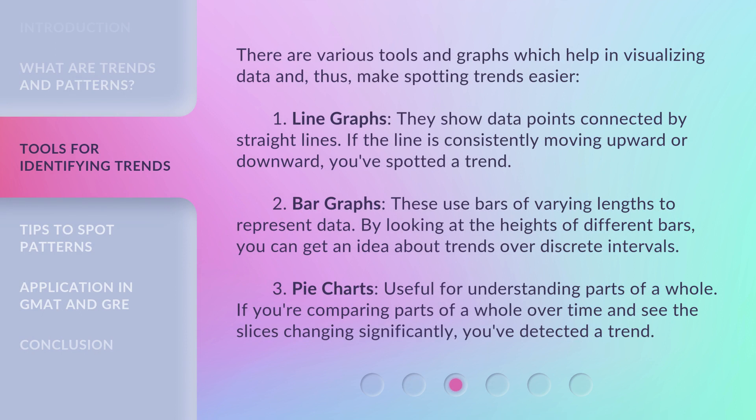There are various tools and graphs which help in visualizing data and, thus, make spotting trends easier. 1. Line graphs: They show data points connected by straight lines. If the line is consistently moving upward or downward, you've spotted a trend. 2. Bar graphs: These use bars of varying lengths to represent data. By looking at the heights of different bars, you can get an idea about trends over discrete intervals. 3. Pie charts: Useful for understanding parts of a whole. If you're comparing parts of a whole over time and see the slices changing significantly, you've detected a trend.